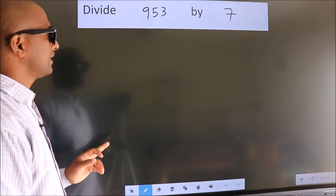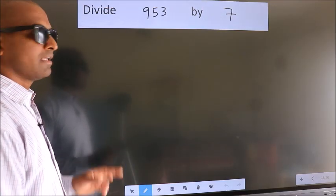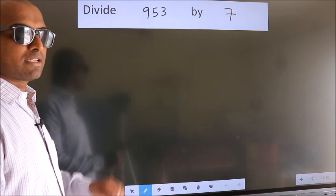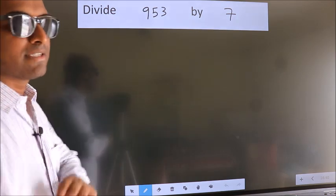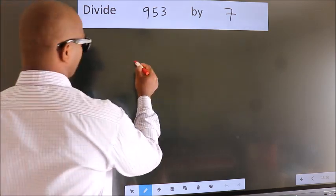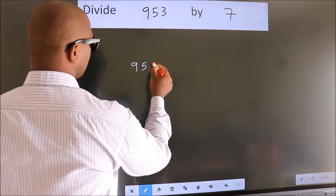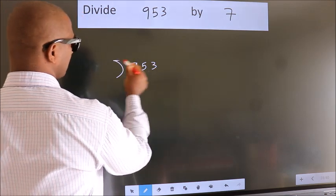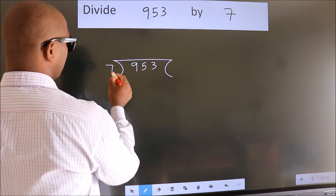Divide 953 by 7. To do this division, we should frame it in this way. 953 here, 7 here.